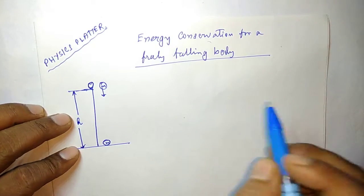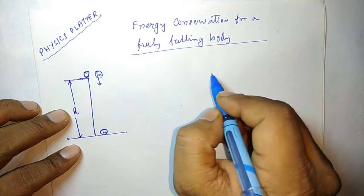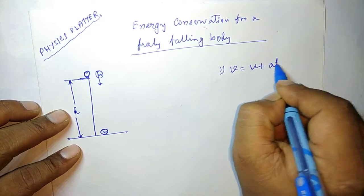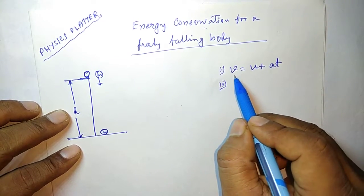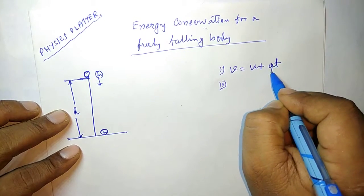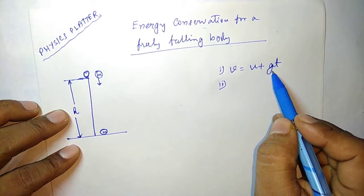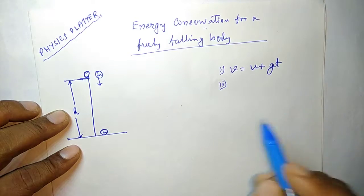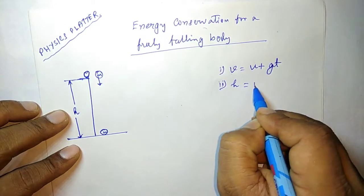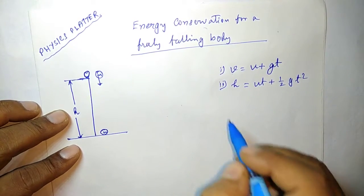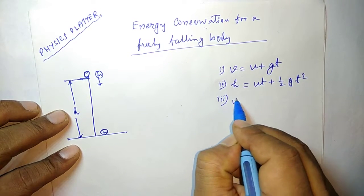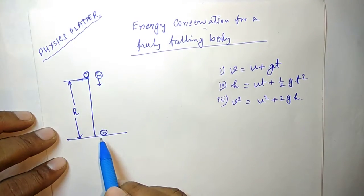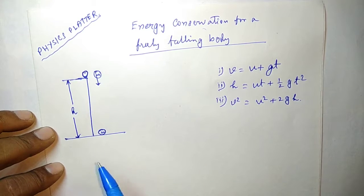First we write down the equations of motion for a freely falling body. There are three equations of motion: number one, v = u + gt; number two, h = ut + ½gt²; and number three, v² = u² + 2gh. Here v is the final velocity, u is the initial velocity, g is the acceleration due to gravity, and t is the time.